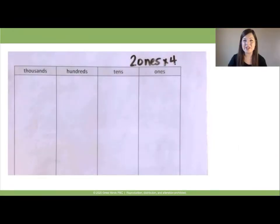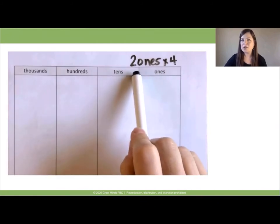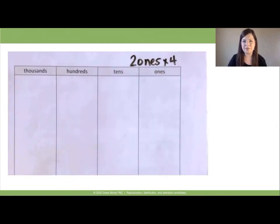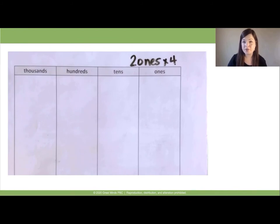Let's read this expression together: 2 ones times 4. Now pause the video, and on your place value chart, draw discs to show 2 ones times 4, or 4 groups of 2 ones, and circle each group of 2 ones.